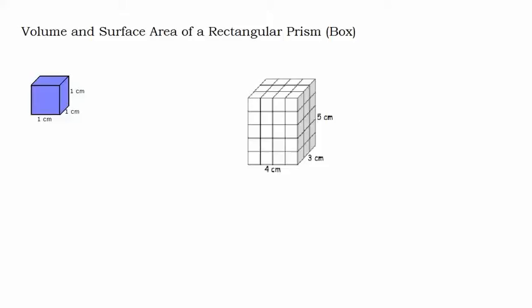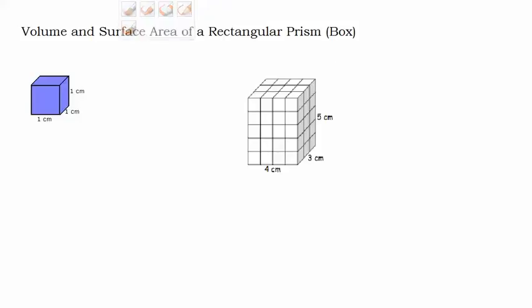In this video, we are going to focus on finding the volume and surface area of a rectangular prism, otherwise known as a box — basically a shoebox shape or something like that. The key characteristic of a rectangular prism is that all the sides are rectangles.